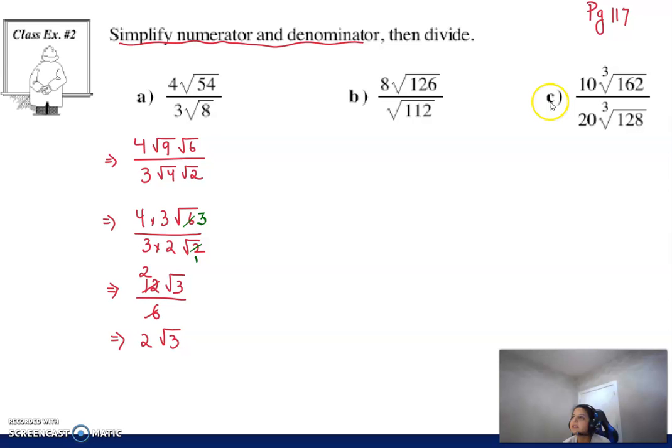And the same thing would happen if we had, let's say, part C. Making sure the index are the same, which they are. We can divide it out. But again, these numbers, 162 and 128, don't divide out completely. So what you would do is try to simplify each one of them.